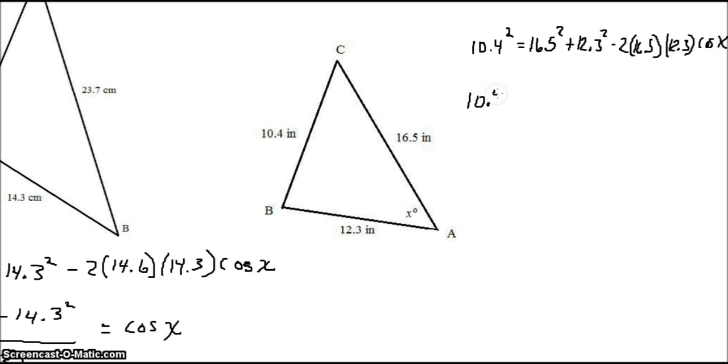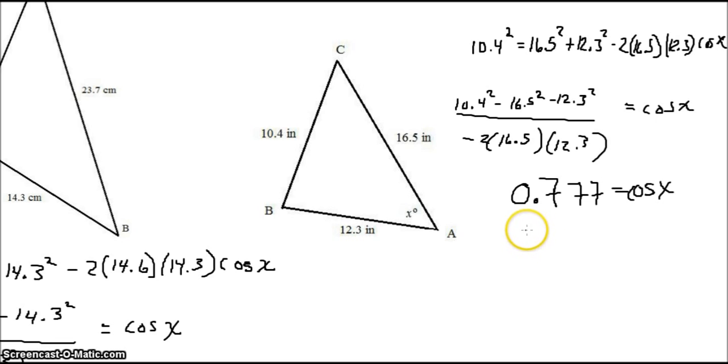10.4 squared minus 16.5 squared minus 12.3 squared, divided by negative 2 times 16.5 times 12.3.